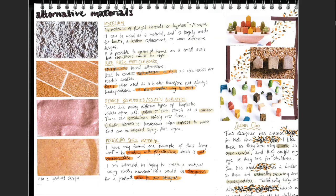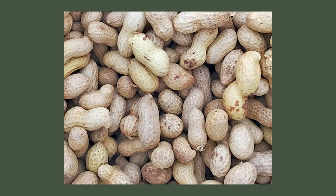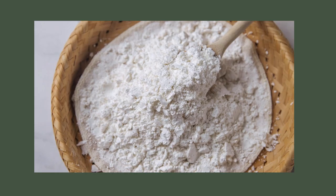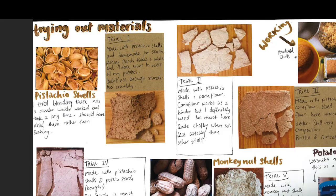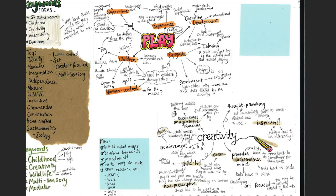I then developed an interest in biomaterials. I started experimenting with things like rice husks, pistachio shells, monkey nut shells, and a lot of potato starch to try and make an interesting material. I worked on that for about a week and then decided this probably wasn't a very sensible use of my time — definitely interesting, but not what I wanted to spend the rest of my year doing.